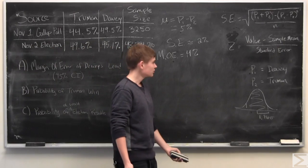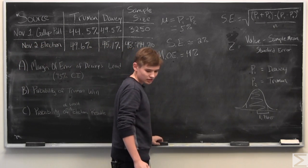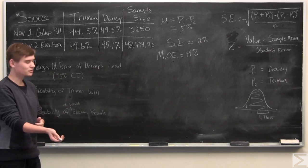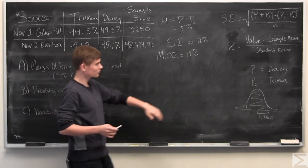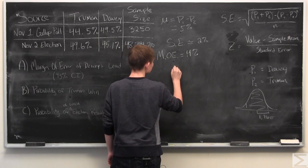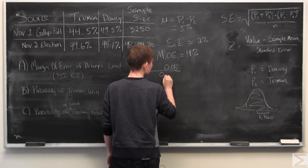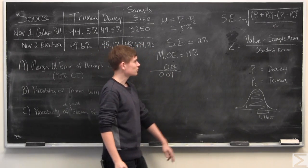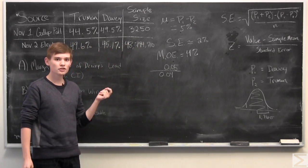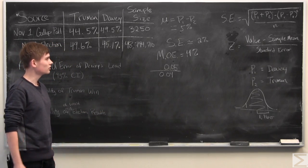Now, let's find the probability of Truman winning the election based on this polling data. And to do this, we have to use z-scores, the formula of which is given here. And so we have the sample mean, which is 5%. We have the standard error, which is 4%. And so now we just need the value that we're calculating the z-score for. And since it's a difference in proportion, we want the tipping point for when Truman will be winning this election is when the difference is 0.